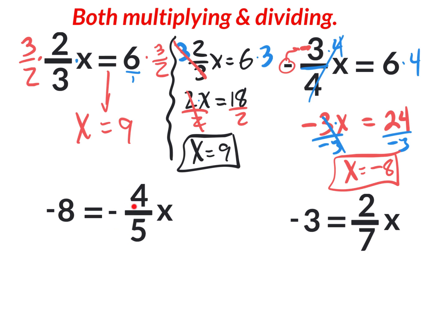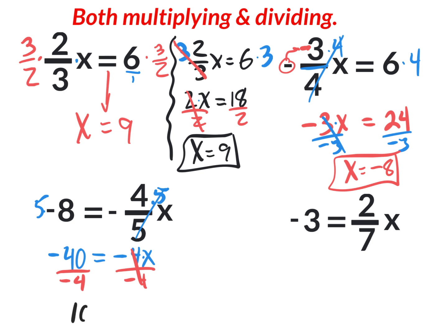The next one: four-fifths x equals negative eight. I prefer to get rid of one thing at a time. I see four divided by five, so I multiply by five to cancel the divided by five. What I do to one side I do to the other: negative eight times five is negative forty. The equal sign comes down. Now I have negative four x equals negative forty. To get rid of multiplication of negative four, divide by negative four on both sides: x equals positive ten.